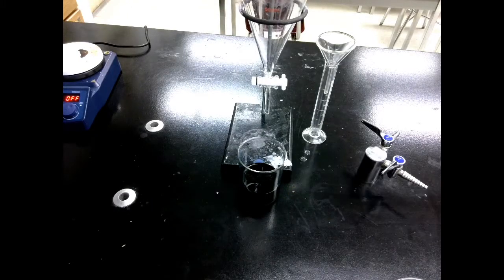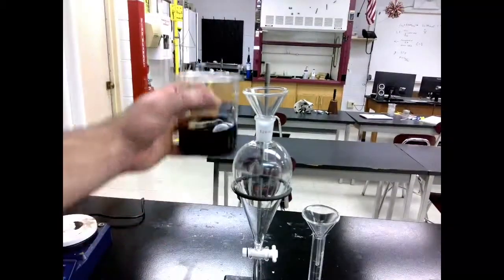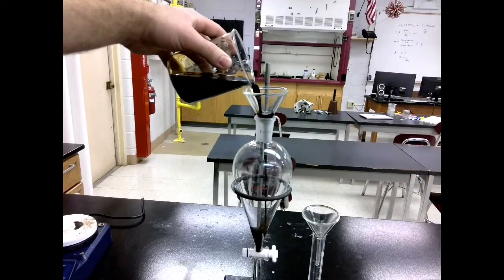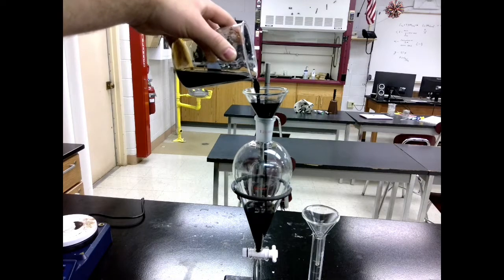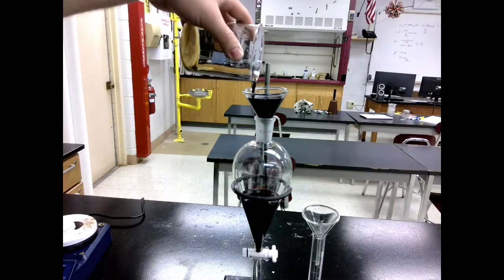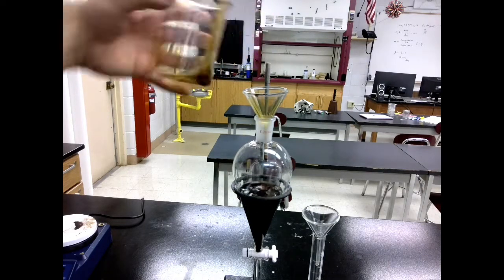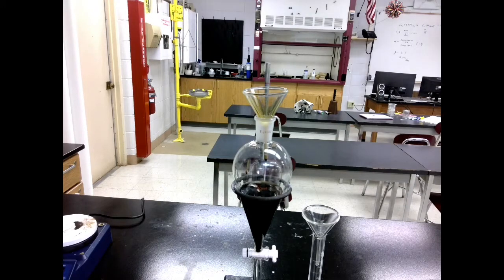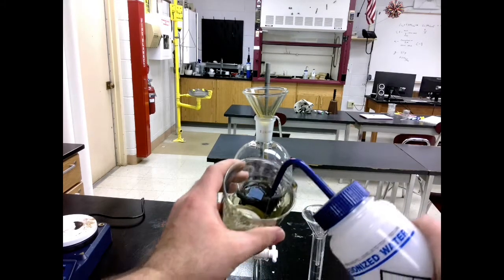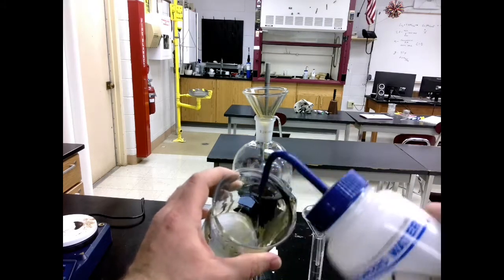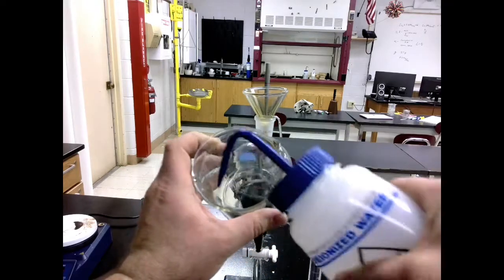Now that our solution is cooled down, we're going to pour it into a separatory funnel. Make sure that your separatory funnel is closed before you pour anything in, otherwise it'll just fall out the bottom. That wouldn't be good. We'd lose all our product. And then we're going to use a wash bottle just to get as much of that tea out as we can. We want to try and collect everything that we possibly can.